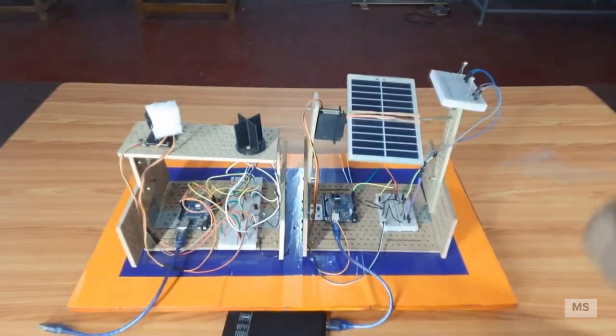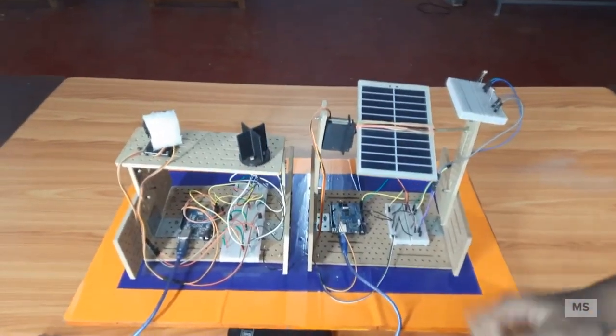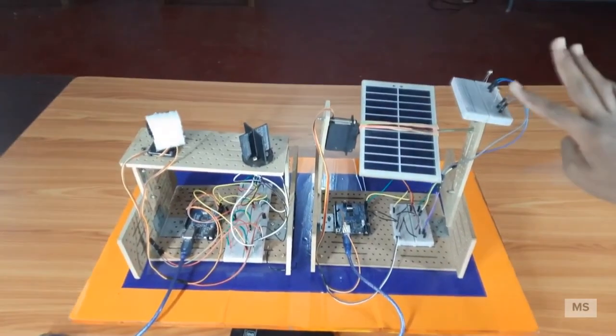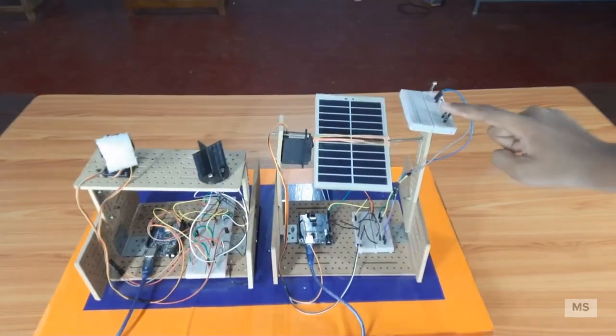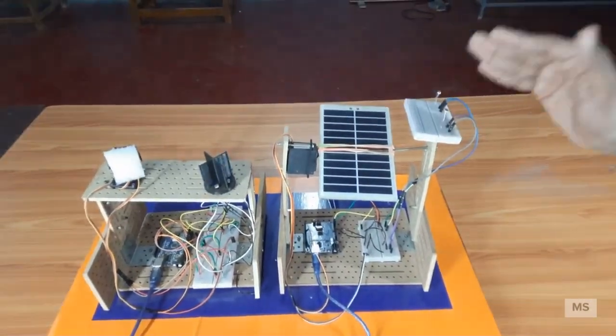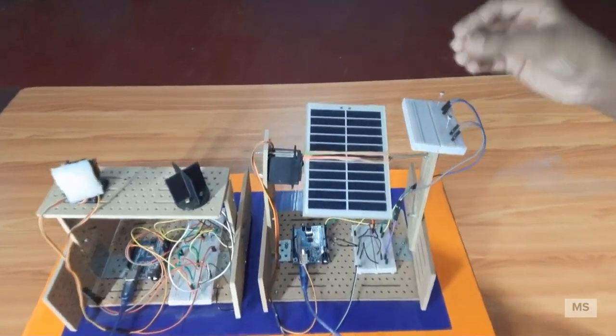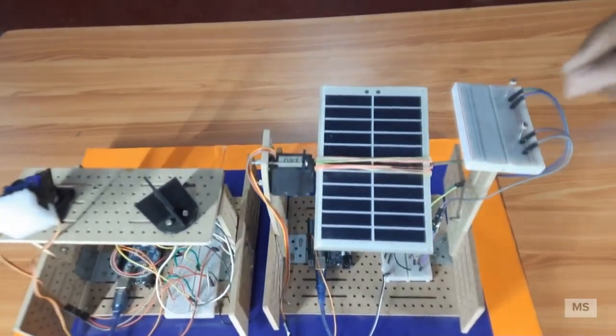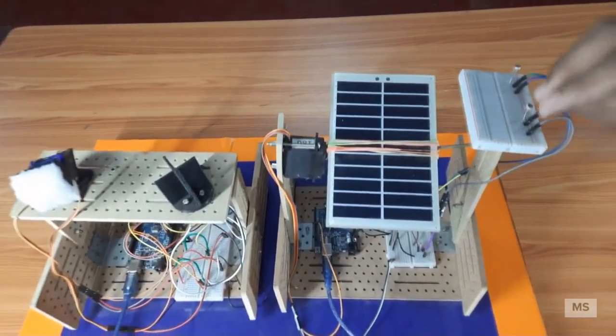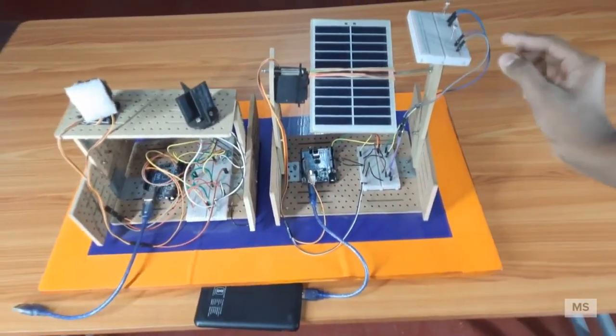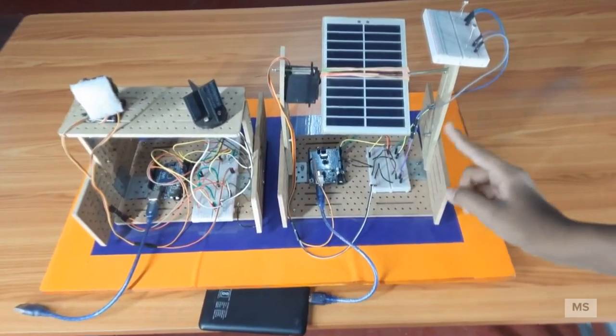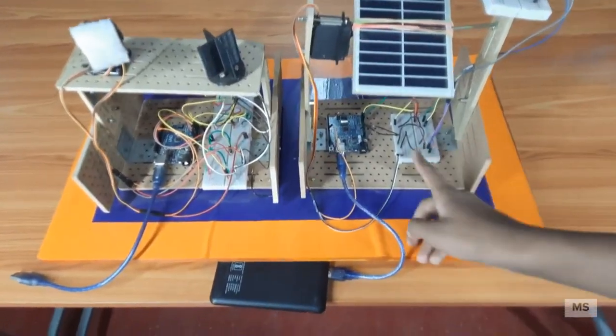What happens here is the light dependent resistance gets the energy from the sun and tells an electric signal to these jumper cables. This electrical signal comes through these jumper cables to a bread board.